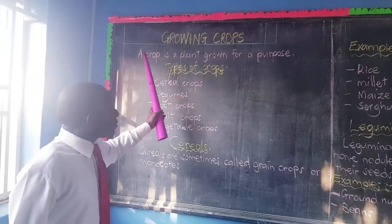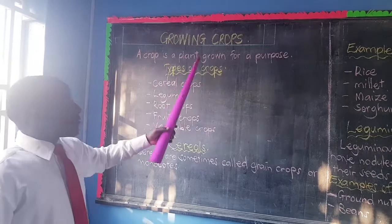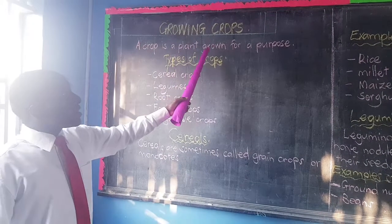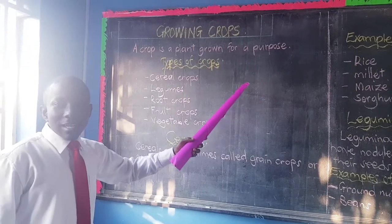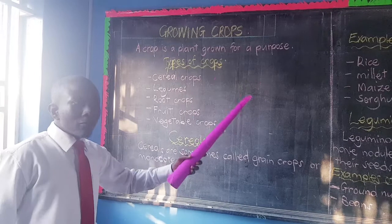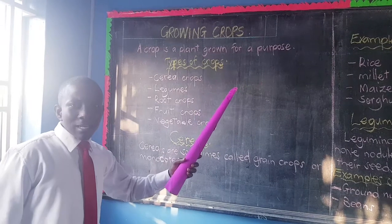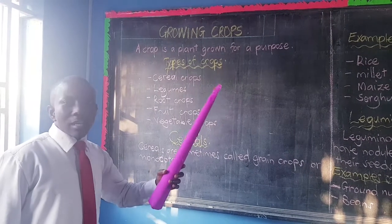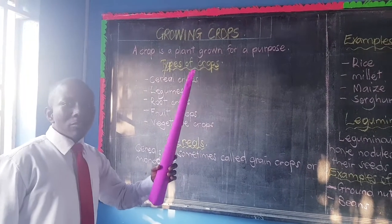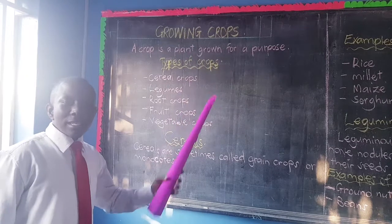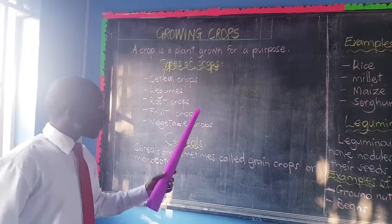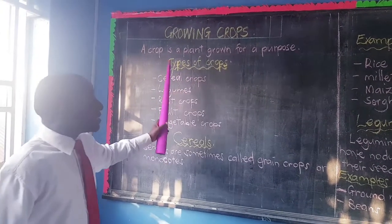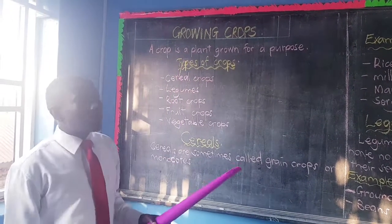First of all, let us define a crop. A crop is a plant grown for a purpose — any plant grown for a purpose. It can be for fruits, it can be for shade, anything. Now those crops are in five types.